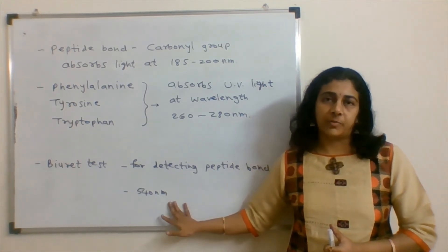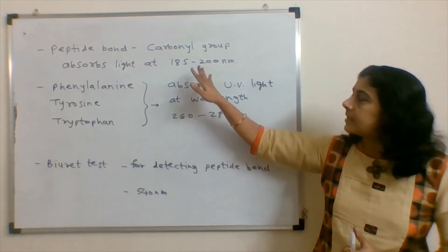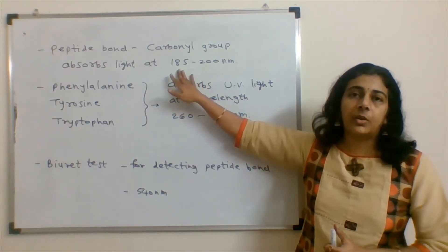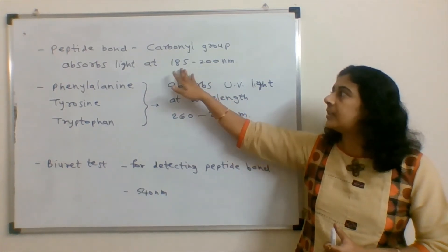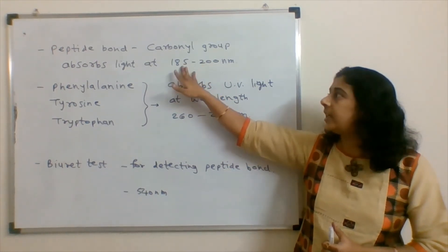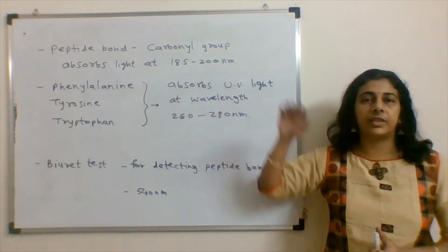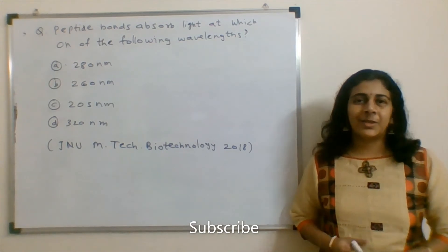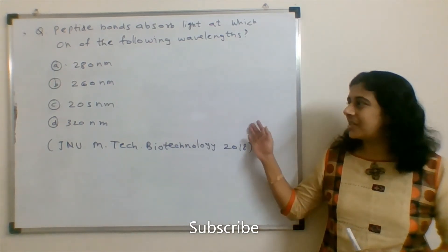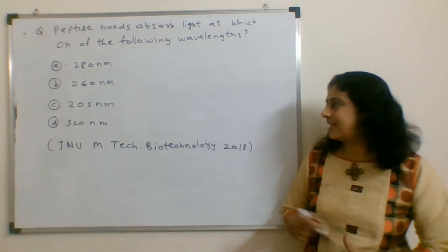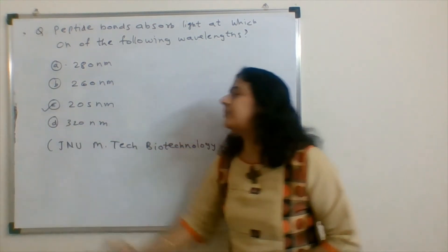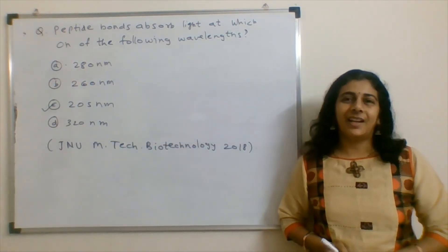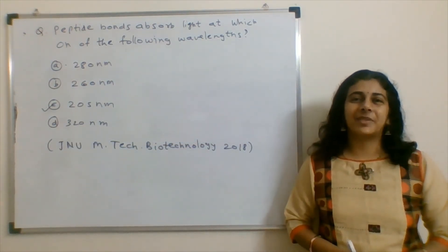So, we need to go to the option which is nearer to the 185 to 200 nanometer wavelength. So, the correct answer for the question becomes option C. That is, 205 nanometer is the wavelength at which peptide bond absorbs the light.